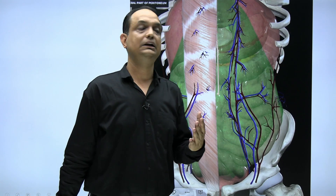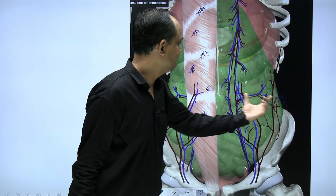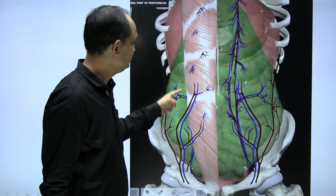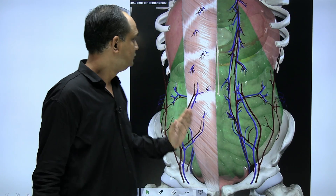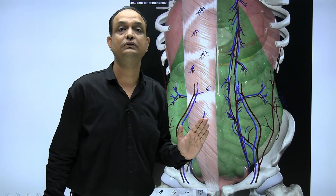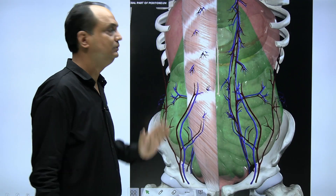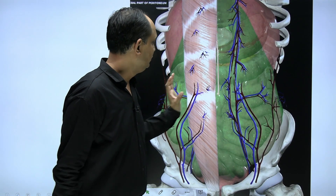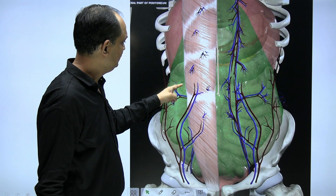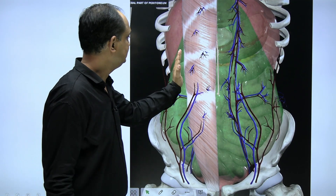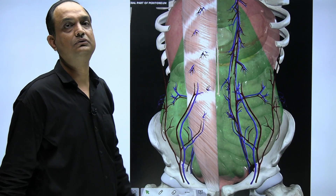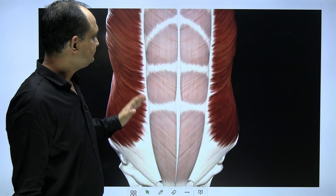The layers differ on the side versus the paramedian region because of the lateral border of the rectus abdominis, known as the linea semilunaris. After the linea semilunaris you have the rectus sheath, which is formed by the aponeuroses of the three lateral muscles — external oblique, internal oblique, and transversus abdominis — which meet at the linea semilunaris. The rectus sheath encloses the rectus abdominis muscle.